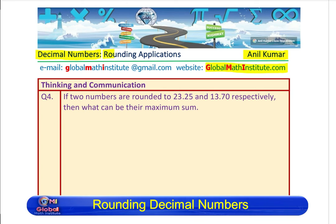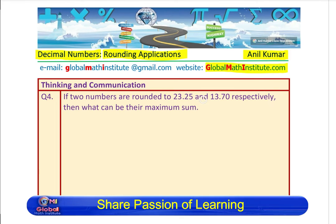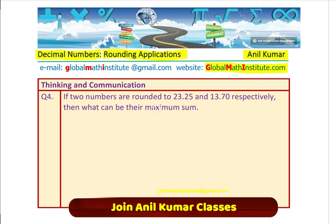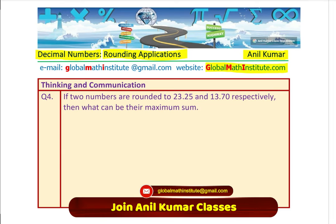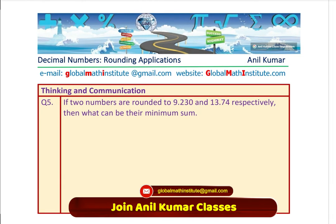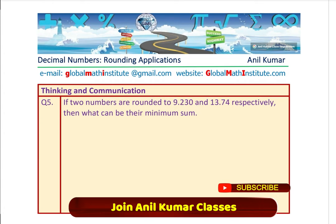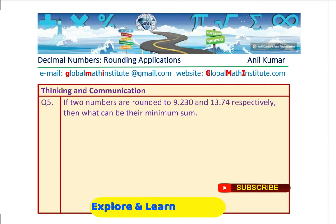We are looking into the applications with rounding. Question number 4 is: if two numbers are rounded to 23.25 and 13.70 respectively, then what can be their maximum sum? Related to this, we have question number 5 also, where if two numbers are rounded to 9.230 and 13.74 respectively, then what can be their minimum sum?